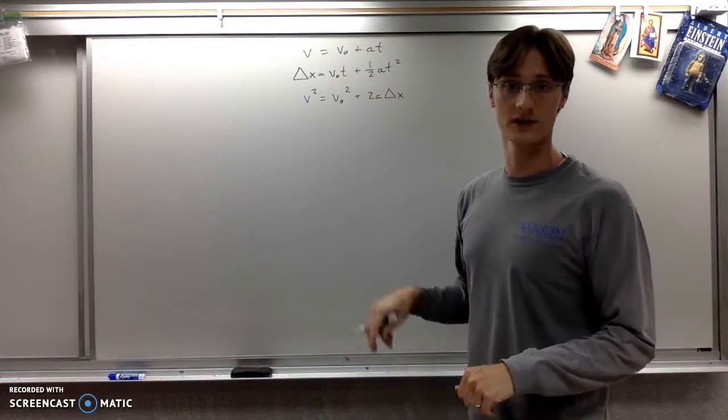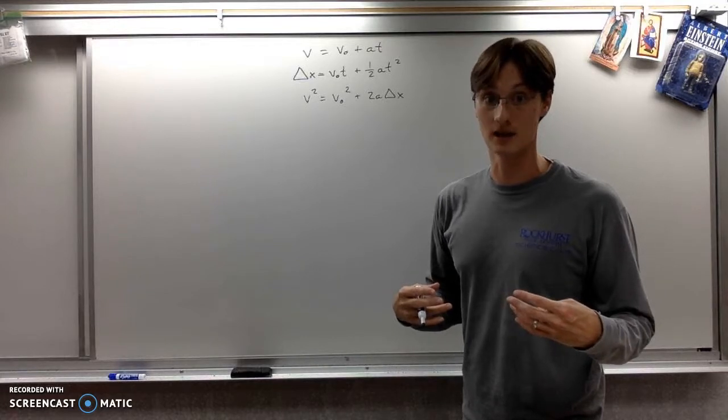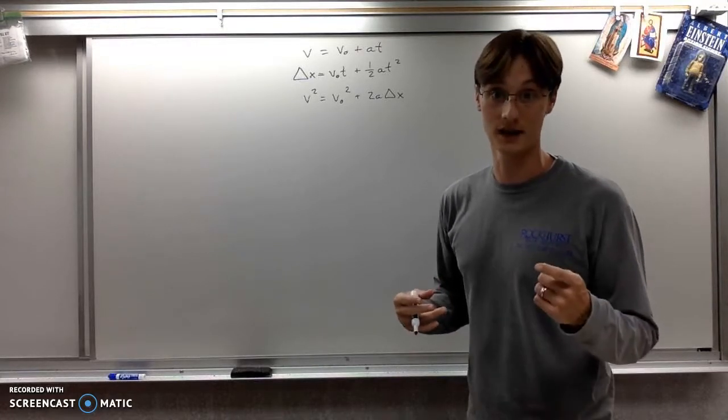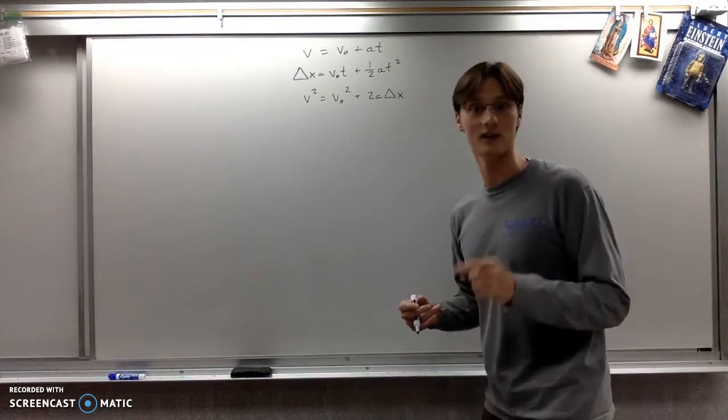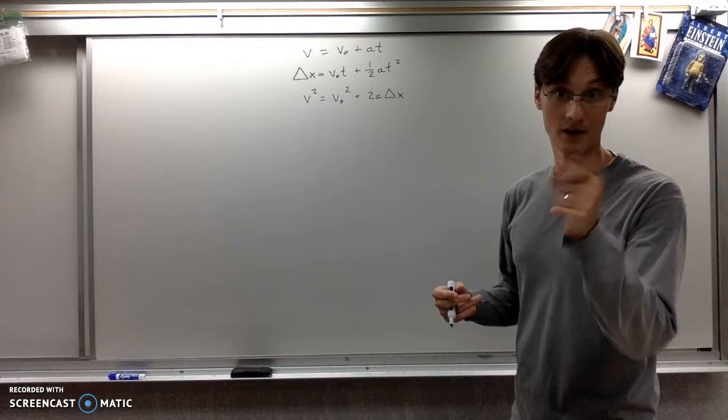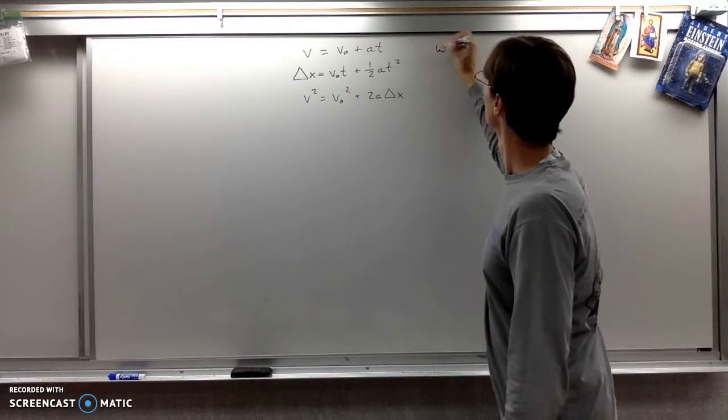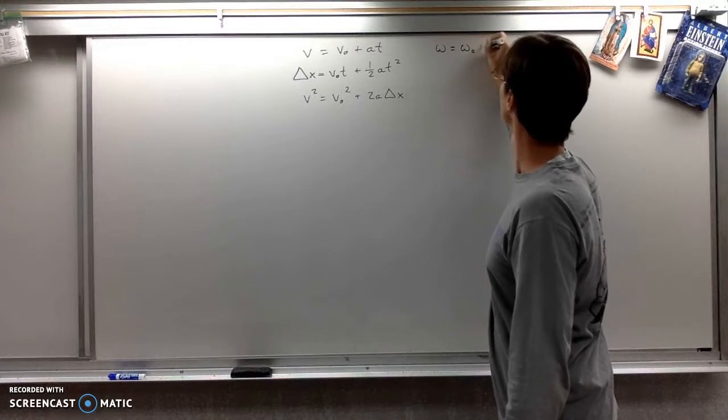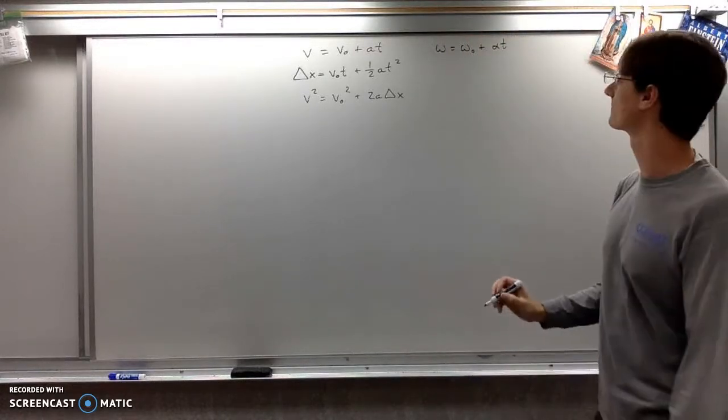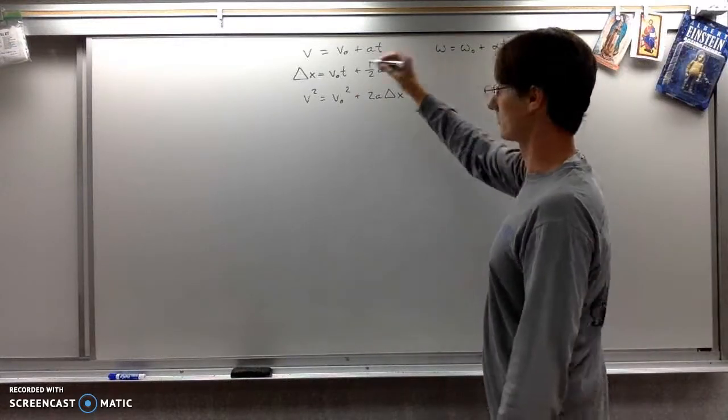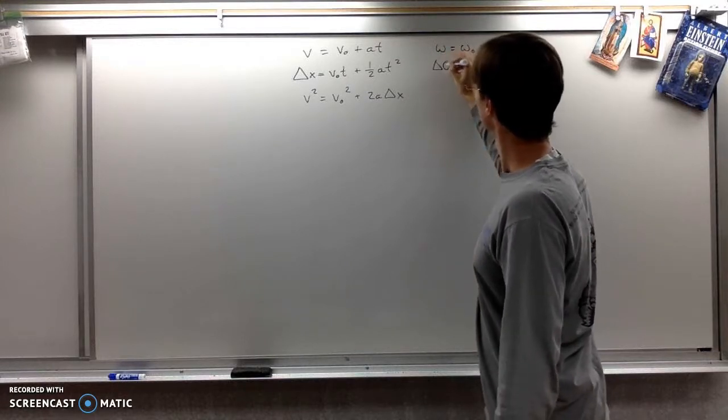So, instead of a V, as you ought to recall, it's going to be an omega, not a W. Because if you say W, I'm going to find you. Maybe I shouldn't say that in the video. Well anyway, better not mess up. It's omega. Don't forget it. And instead of an A, it's going to be an alpha. For delta X, we're going to have delta theta.